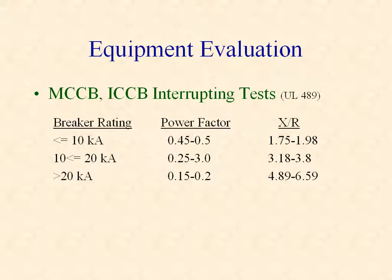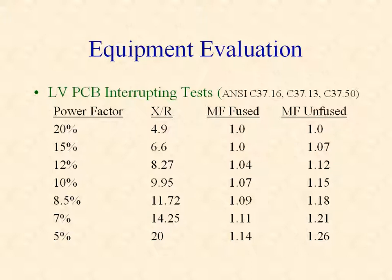The rate of decay of the fault current also affects the amount of current the protected device needs to interrupt. The X over R affects the rate of decay. Since the protected devices are tested at a typical X over R, the published ratings must be derated for applications at higher X over R. Molded case and insulated case circuit breakers are tested at an X over R of 1.75 to 6.59 depending on the size of the breaker. Low voltage power circuit breaker ratings are published at an X over R of 6.6. For applications where the X over R is higher than 6.6, the breaker rating must be derated. For example, if your system X over R is 20, the published rating must be divided by 1.14 for a fused circuit breaker and 1.26 for an unfused circuit breaker.